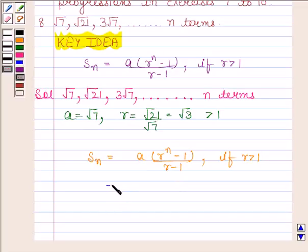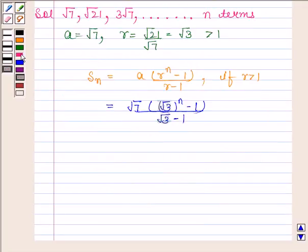By substituting the values, we get root 7 into root 3 to the power n minus 1 upon root 3 minus 1. On rationalizing it, we get root 7 into root 3 to the power n minus 1 into root 3 plus 1 upon root 3 minus 1 into root 3 plus 1.